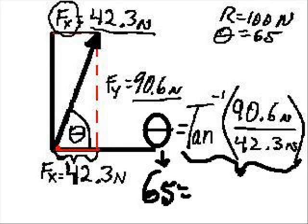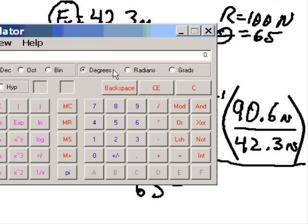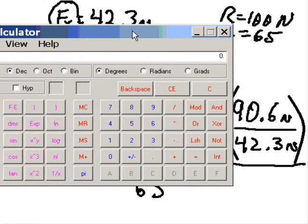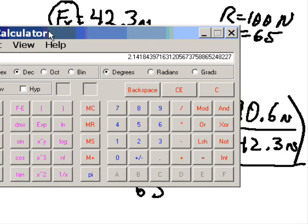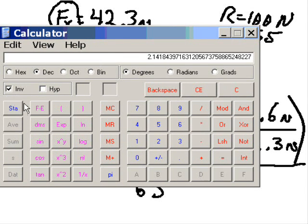Let's find out. Where's that calculator? Clear off the screen. 90.6 newtons divided by 42.3 newtons equals 2.14. Now I'm going to click on the inverse button and then click on tangent. I should get about 65 or pretty close to it. Here we go. 64.97.